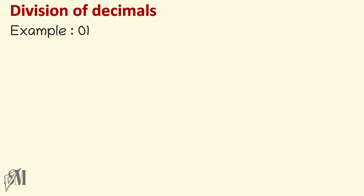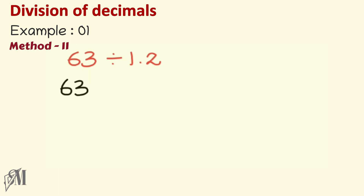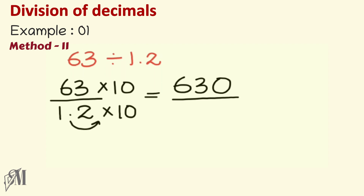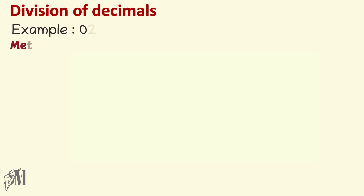In the second method, we write 63 divided by 1.2 as a fraction. To cancel the decimal in the denominator, we multiply both numerator and denominator by 10 — because 1.2 has one decimal place. This gives 630 over 12, and again the answer is 52.5.